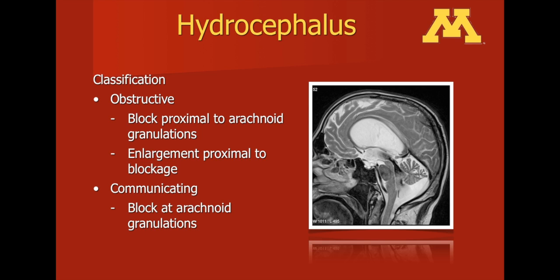When one has obstructive hydrocephalus, it is important not to drain cerebrospinal fluid from the lumbar cistern. If one were to do so, there would be a change in the pressure gradient with less pressure in the lumbar cistern, forcing the brain inferiorly down through the foramen magnum, which leads to a condition called brain herniation. With communicating hydrocephalus, a lumbar tap or lumbar drain is oftentimes utilized and can be done safely because the entire ventricular system has an abnormal amount of cerebrospinal fluid.